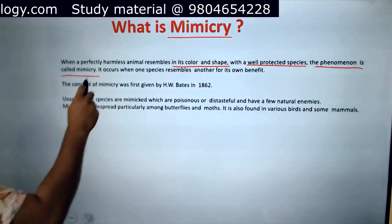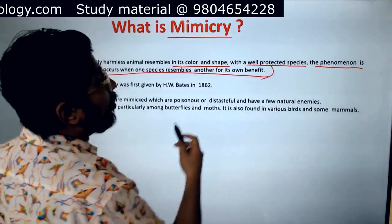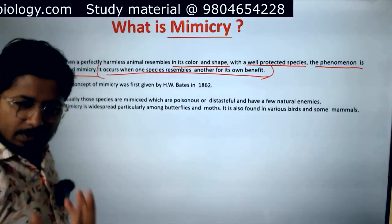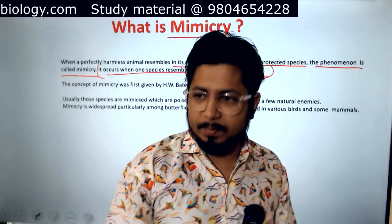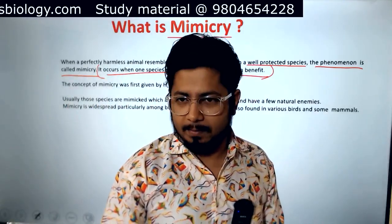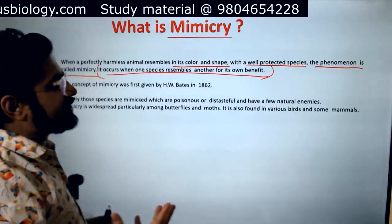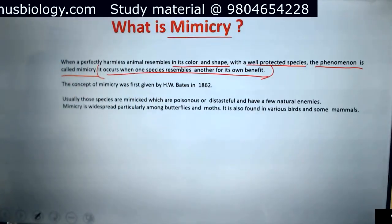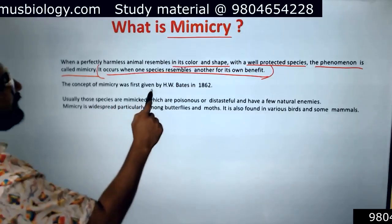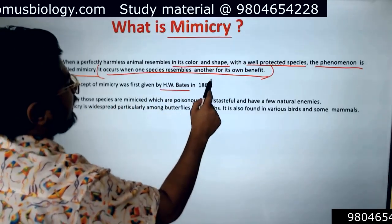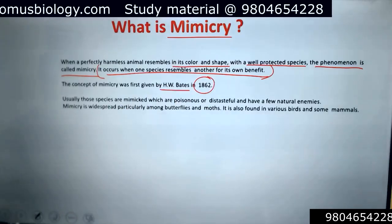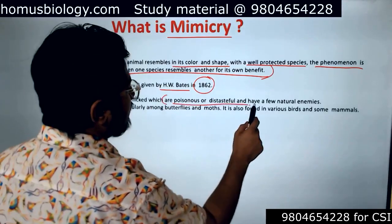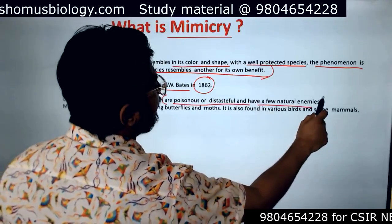Mimicry occurs when one species resembles another for its own benefit — copying others for its own benefit. Mimicry always gives benefit to the organism that is mimicking. The concept of mimicry was first given by W.H.W. Bates in 1862. Usually, those species are mimicked which are poisonous, distasteful, and have few natural enemies.